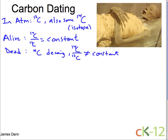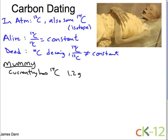Let's take a specific example. Let's assume that your mummy that you dug up in your backyard currently has a C14 mass of 1.2 grams. Then you look at the C12 — that's the stable carbon, which stays the same. By looking at how much C12 there is, you can say this mummy should have 3 grams of C14, but it only has 1.2 grams, so it must be old — it must have been decaying away.